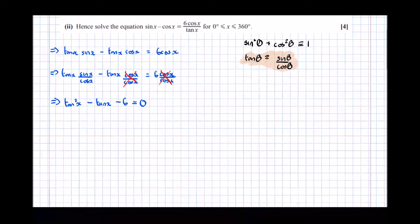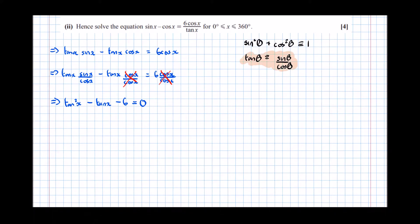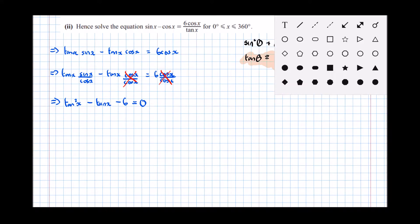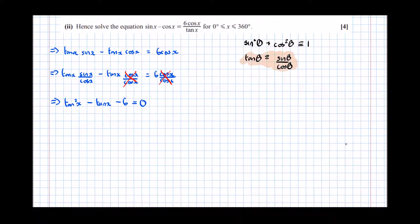So now hence solve the equation for x between 0 and 360. Well I notice that this is a hidden quadratic, and I really should label these parts 1 and 2. So going back to the hidden quadratic, I've got tan squared x minus tan x minus 6 equals 0.